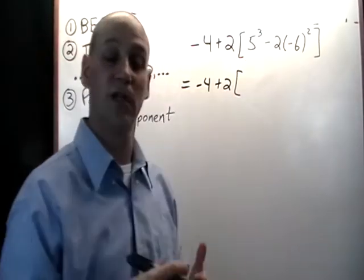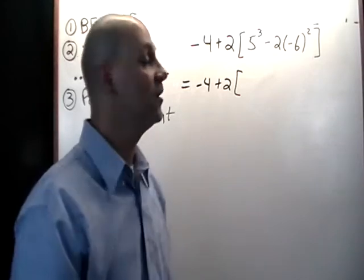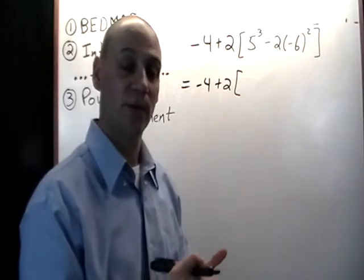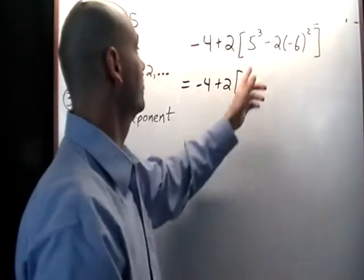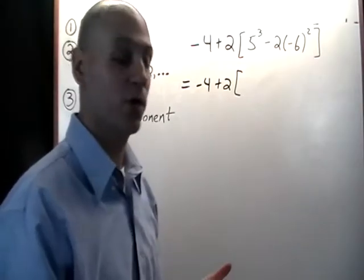So 5 cubed, you can either take out your calculator and type that in, or you can go 5 times 5 times 5. And so 5 cubed is going to end up being 125.